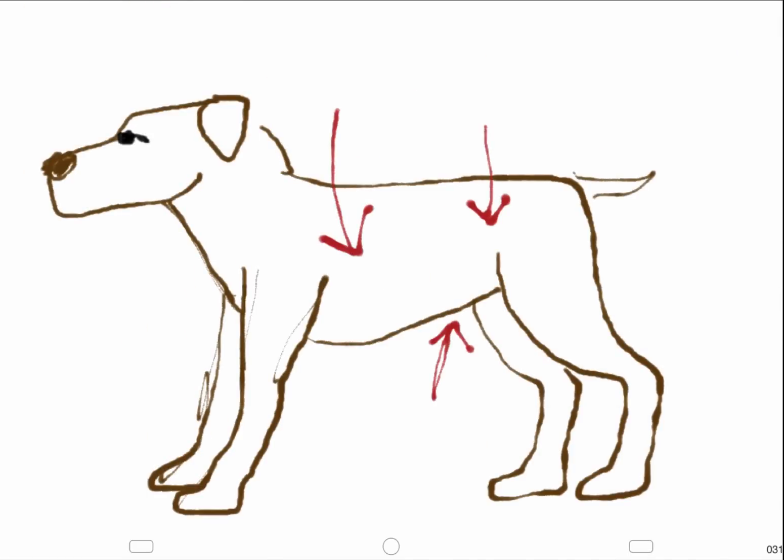The body condition of the dog should be assessed by feeling the fat covering the ribs. As well as that, palpation and observation of a stomach tuck and waist are other methods of assessing body condition.